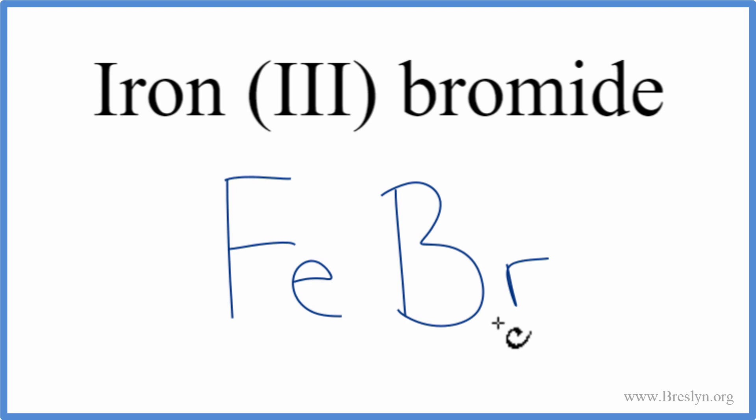Iron's a metal, and bromine is a non-metal. So when we have a metal and a non-metal, we have an ionic compound. We need to think about the charges on the iron and the bromine. The name iron (III), that 3 tells us the charge on the iron is 3+.